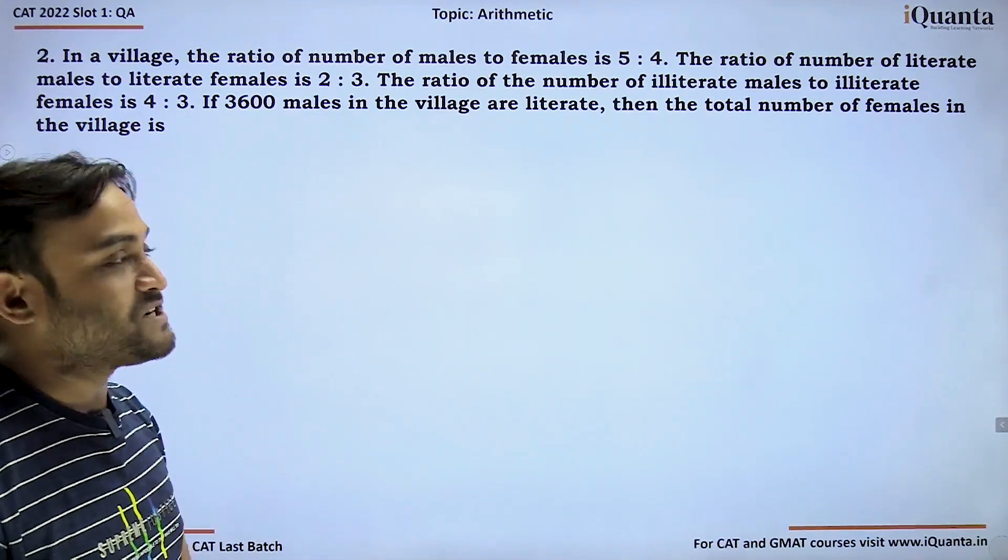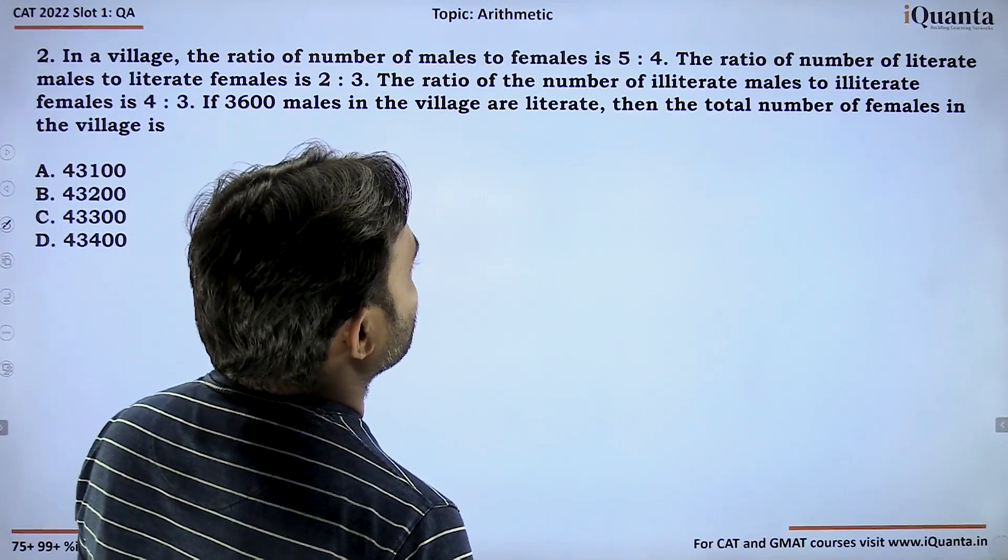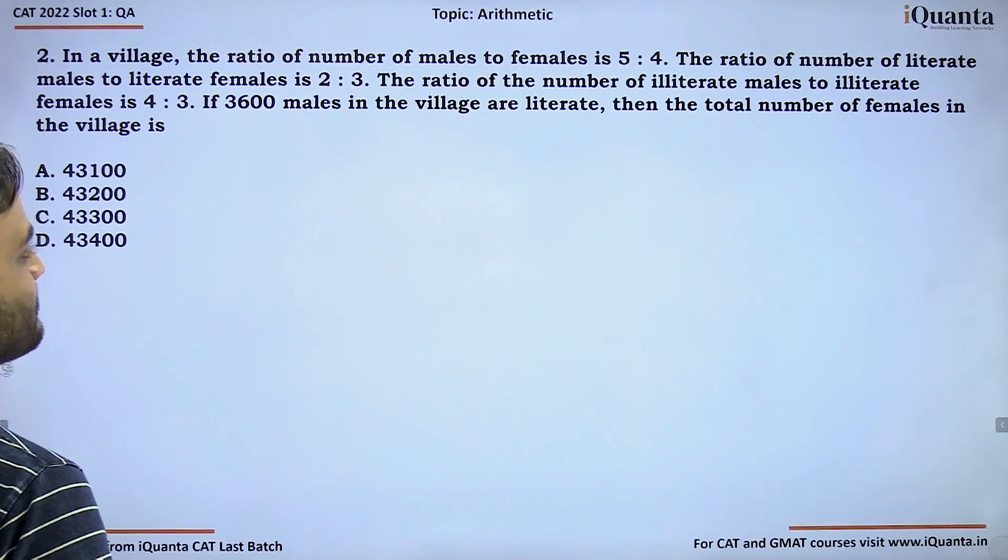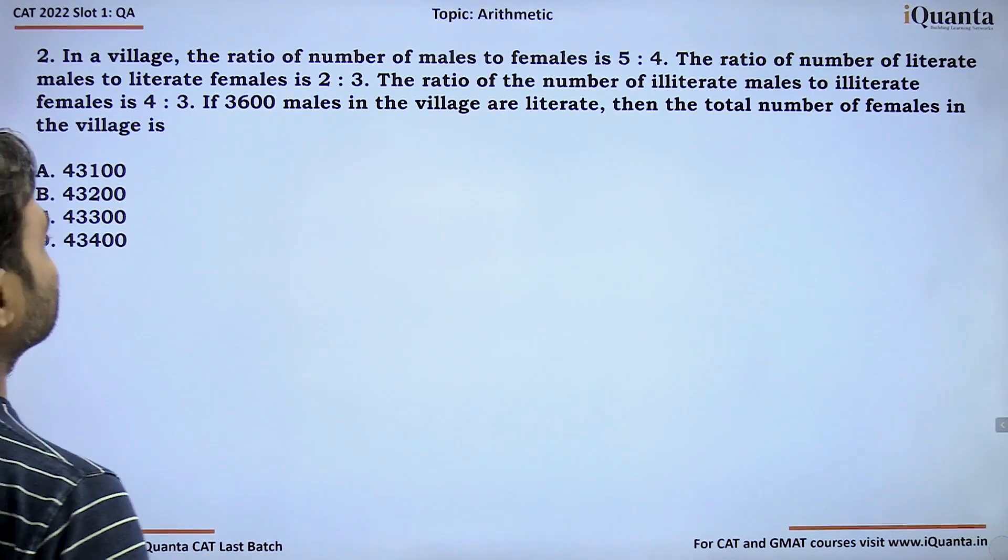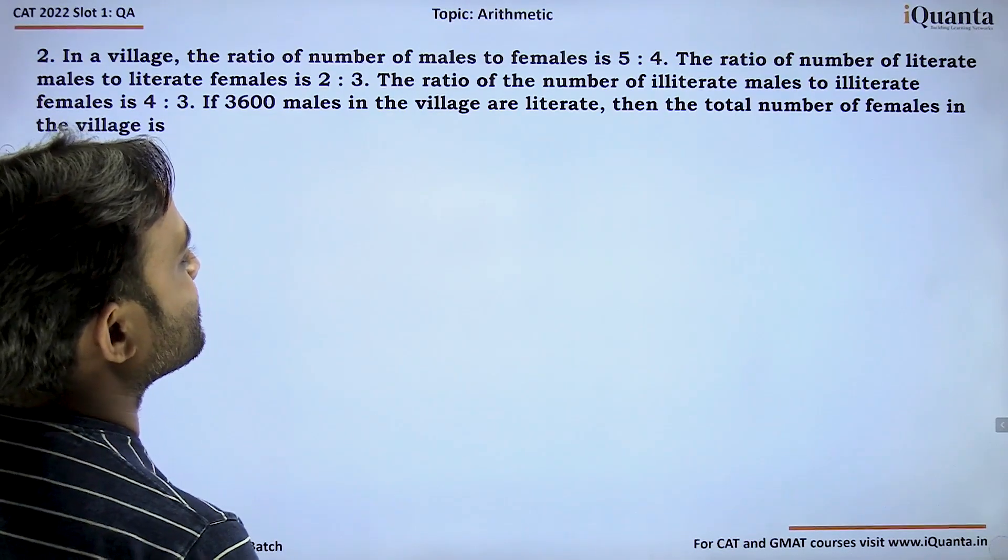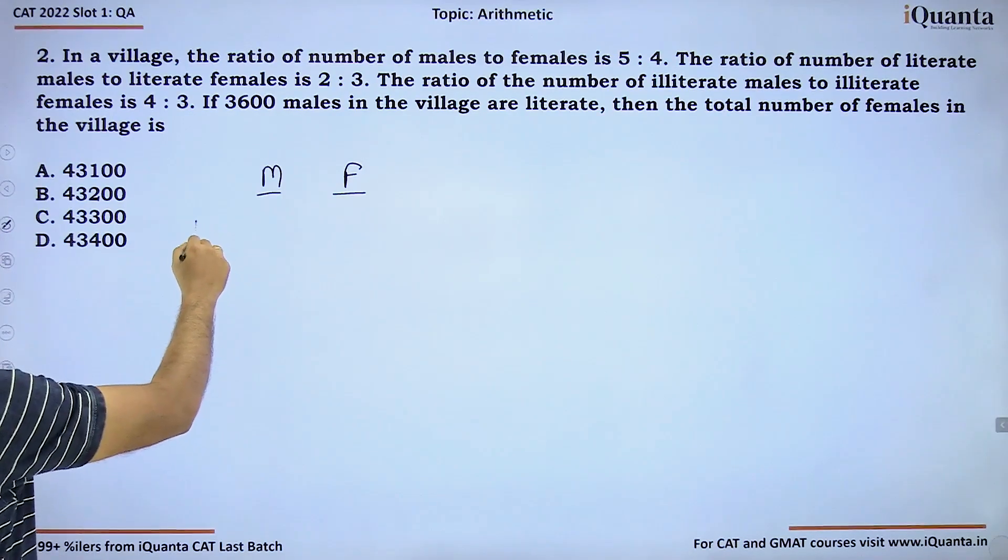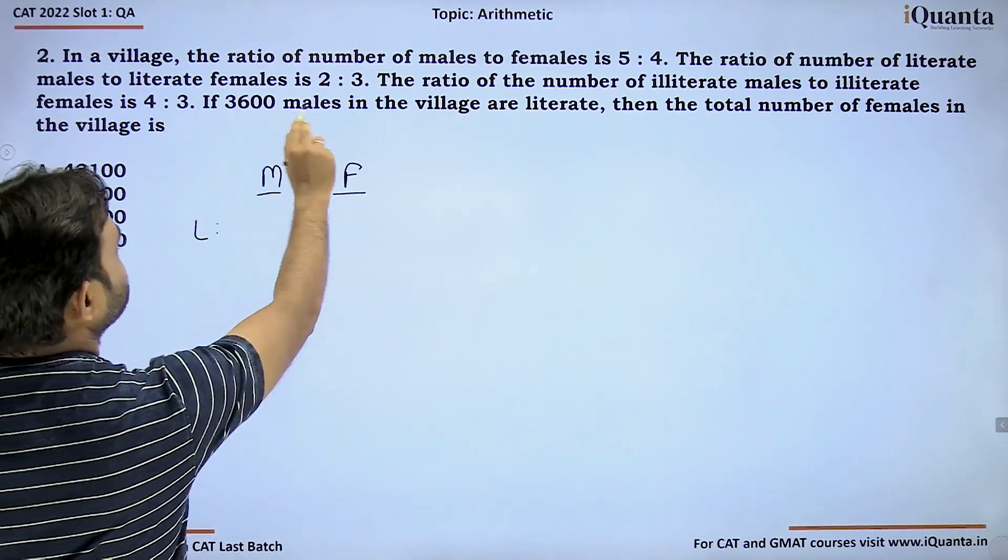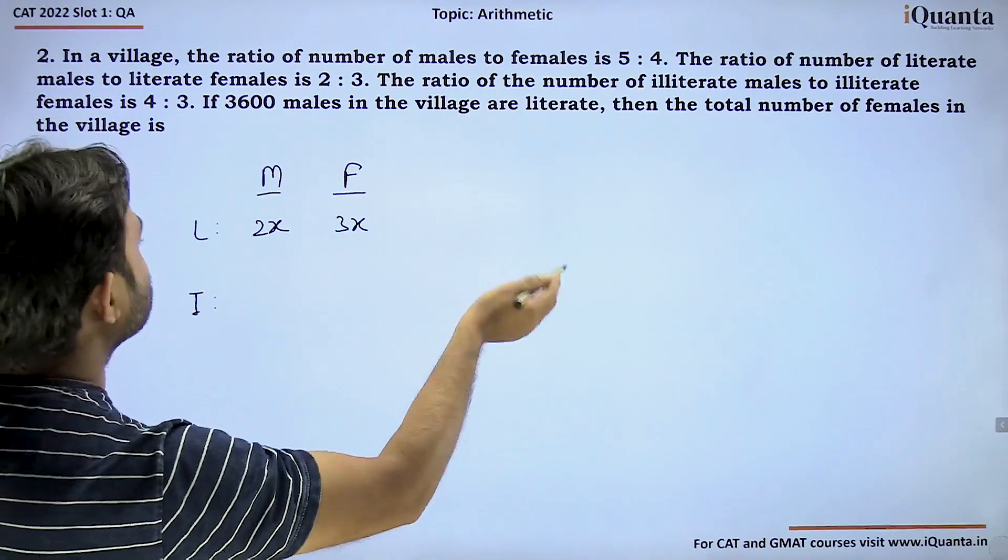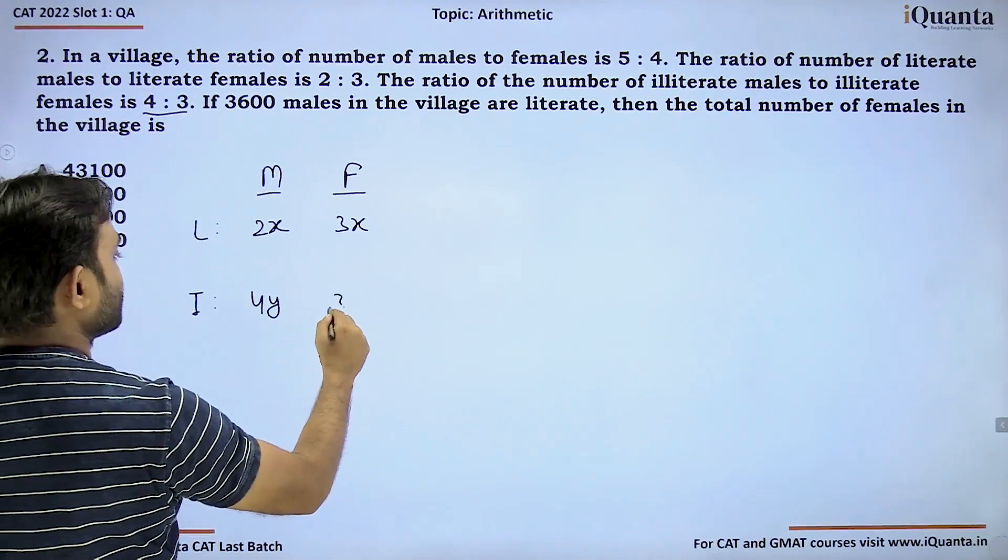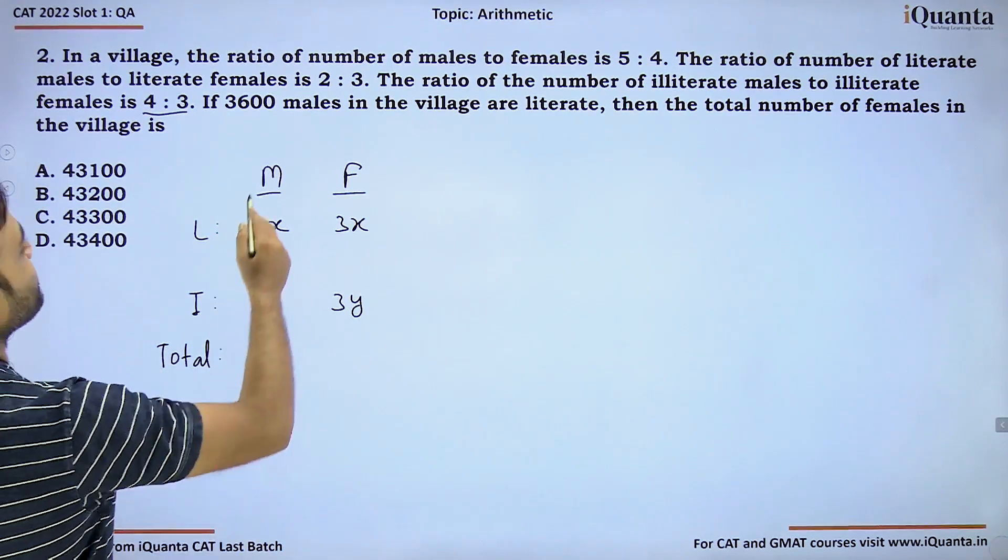Second question is based on ratio concept. In a village the ratio of number of males to females is 5 to 4. The ratio of number of literate males to illiterate females is 2 to 3 and the ratio of illiterate males to illiterate females is 4 to 3. If 3600 males in the village are literate, find the total number of females.